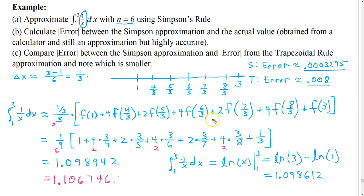It's really not any harder to use. The only disadvantage that Simpson's rule has is that you have to have an even number of nodes.